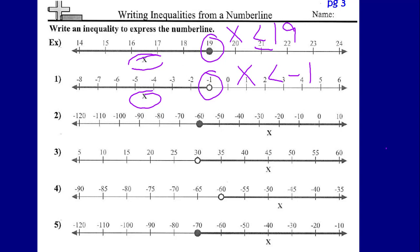Let's look at number 2. This time our x solution line goes to the right of negative 60, so x is going to be greater than negative 60. Looking at the circle, it is a closed circle — it has been filled in — which means that negative 60 is a possible solution. So our inequality is going to be x is greater than or equal to negative 60. You could also rewrite that as negative 60 is less than or equal to x — either way, it represents the same inequality.